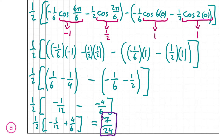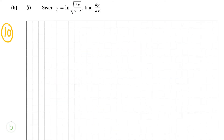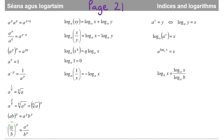Now let's move on to part B, and B part 1 is also worth 10 marks. We're given that y equals ln of the square root of 5x over x minus 2, and we need to find dy/dx. To make this easier, we're going to rewrite the logarithm using the rules on page 21 of our formula and tables book. The second rule tells us that ln of a fraction equals ln of the numerator minus ln of the denominator.